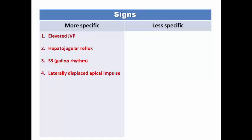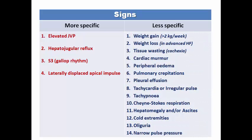Signs more specific for heart failure include elevated JVP, hepatojugular reflux, S3 with tachycardia forming a gallop rhythm, and laterally displaced apical impulse. Less specific signs include weight gain in early stages or weight loss and tissue wasting in advanced stages, presence of a murmur, peripheral edema, crepitations, pleural effusion, tachycardia, tachypnea, hepatomegaly, ascites, cold extremities, oliguria, and narrow pulse pressure.